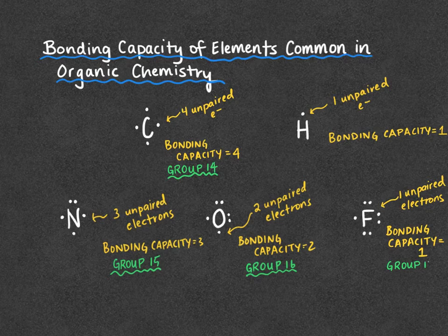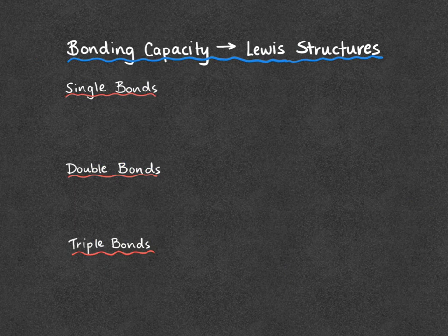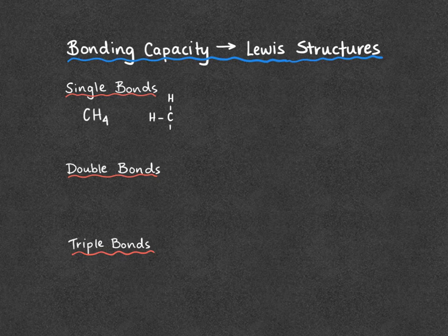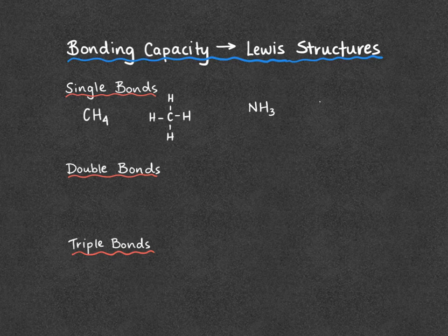Fluorine, chlorine, bromine, and iodine are all going to have a bonding capacity of one. Once you know the bonding capacity of your element, you can draw Lewis structures incorporating single bonds, double bonds, and triple bonds to fulfill that bonding capacity. For example, CH4: carbon has a bonding capacity of four, and we have four hydrogens, so we have single bonds between carbon and all four hydrogens. The same is true for NH3 — nitrogen has a bonding capacity of three, and three hydrogens give us three single bonds to nitrogen.